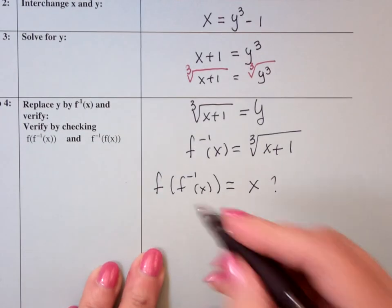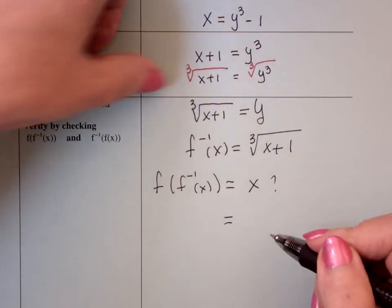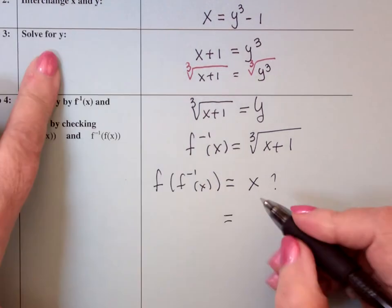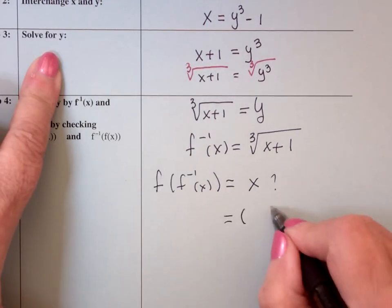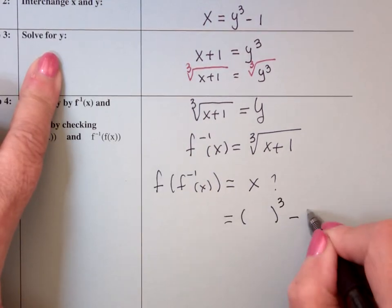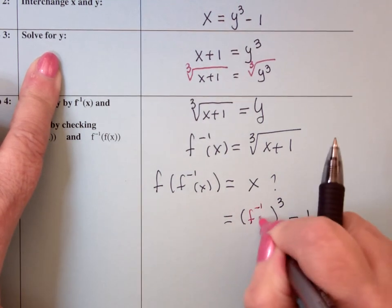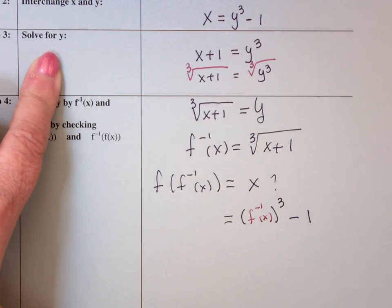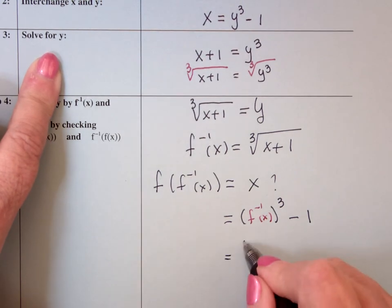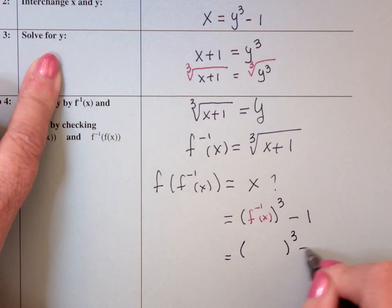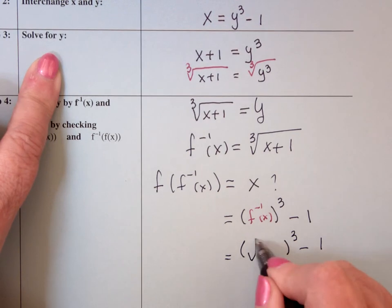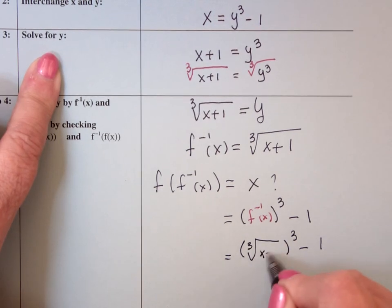So that says anything in the function f, which is f was x cubed minus 1. Wherever there's an x, I'm going to put the inverse. We said a candidate for the inverse was the cube root of x plus 1.